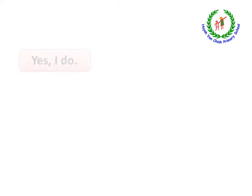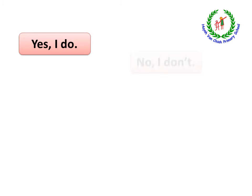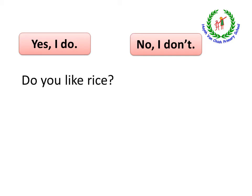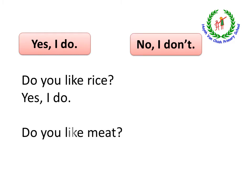Và để trả lời cho câu hỏi 'Do you like?', chúng ta có 2 cách trả lời. Nếu chúng ta thích, chúng ta trả lời: 'Yes, I do.' Còn ngược lại, nếu chúng ta không thích, chúng ta sẽ trả lời: 'No, I don't.' For example: 'Do you like rice?' — Bạn có thích cơm không? Nếu bạn thích thì bạn sẽ trả lời: 'Yes, I do.' — Vâng, tôi thích. Ví dụ thứ 2: 'Do you like meat?' — Bạn có thích thịt không? Nếu bạn không thích ăn thịt, bạn sẽ trả lời: 'No, I don't.'